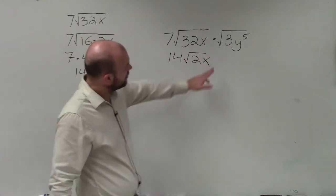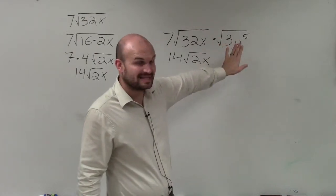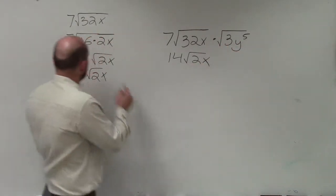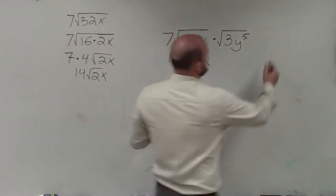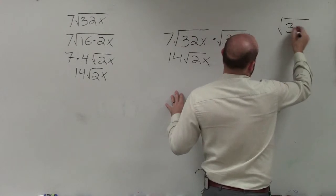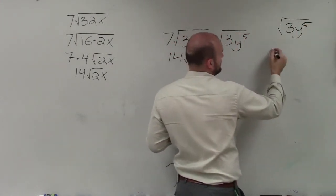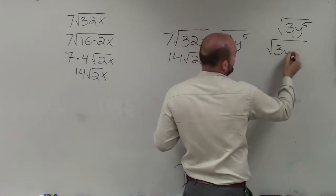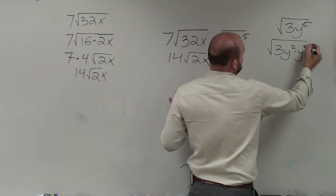And then over here, well, 3 is a prime number, but y to the fifth power is not. And remember, we always want to take, just like how 16 is a squared number, y squared is a squared number. So to simplify this, I'll take this and say, all right, how many y squareds can I write for y to the fifth? Well, I can rewrite that as square root of 3 y squared times y squared times y to the first power.